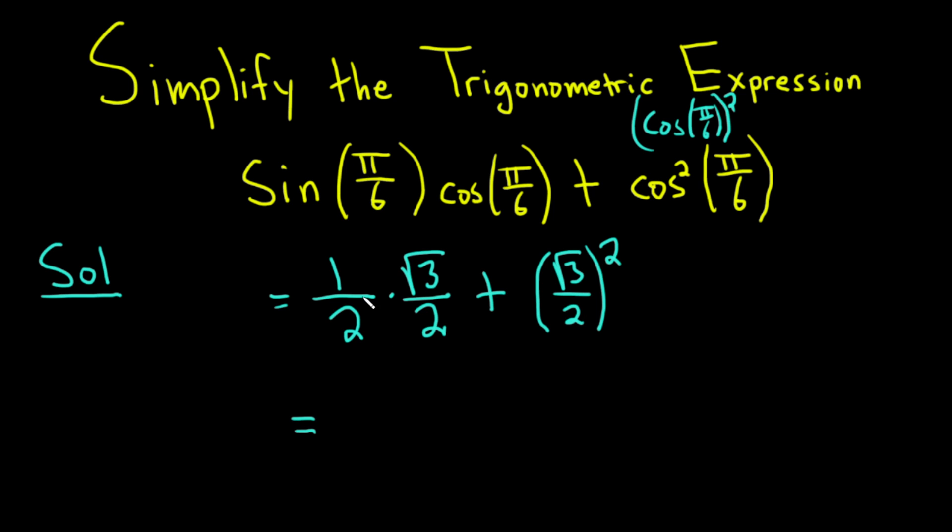So this is equal to 1 times the square root of 3 is the square root of 3. 2 times 2 is 4 plus. And then here we just square the numerator, so we get 3, and then we square the denominator, so we get 4.